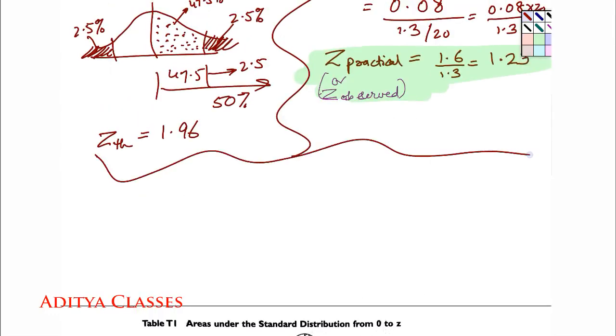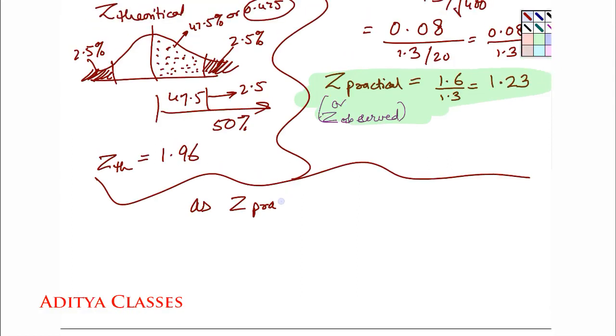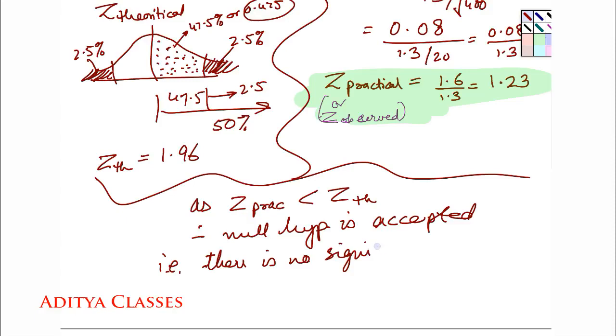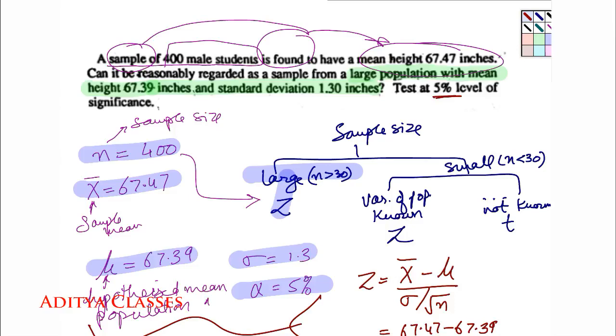So what will be my final analysis? Null hypothesis: as Z practical which is 1.23 is less than Z theoretical, therefore null hypothesis is accepted. And that is, instead of writing it as no difference, we will call it there is no significant difference in sample and population mean. This is my submission for the analysis in given details.